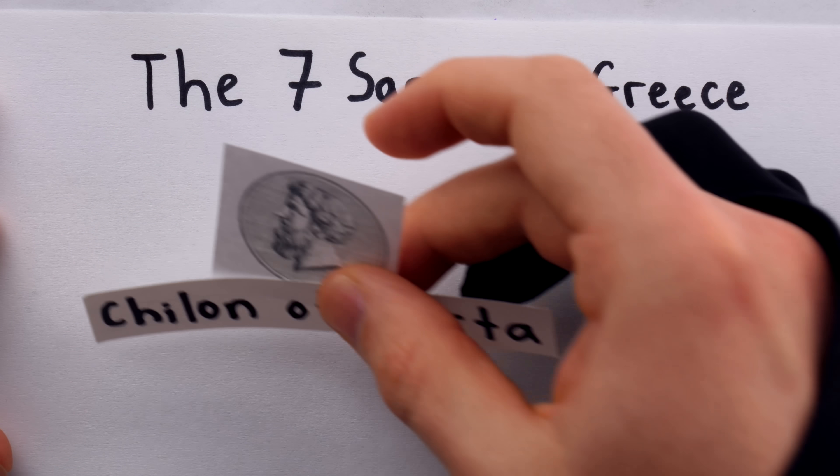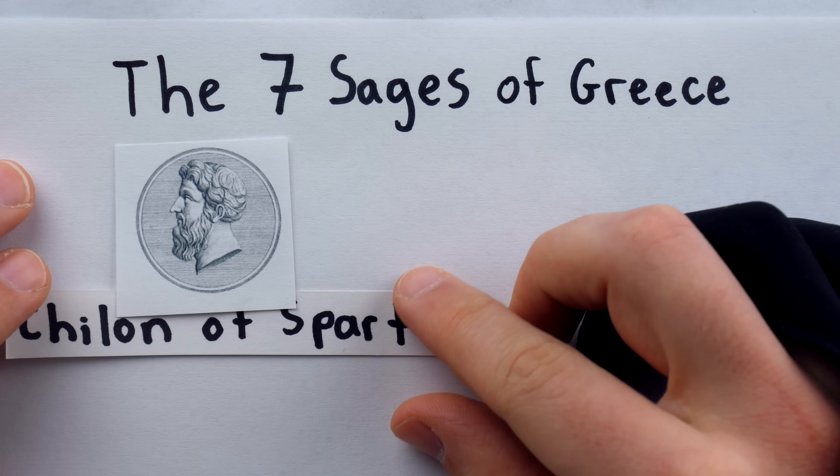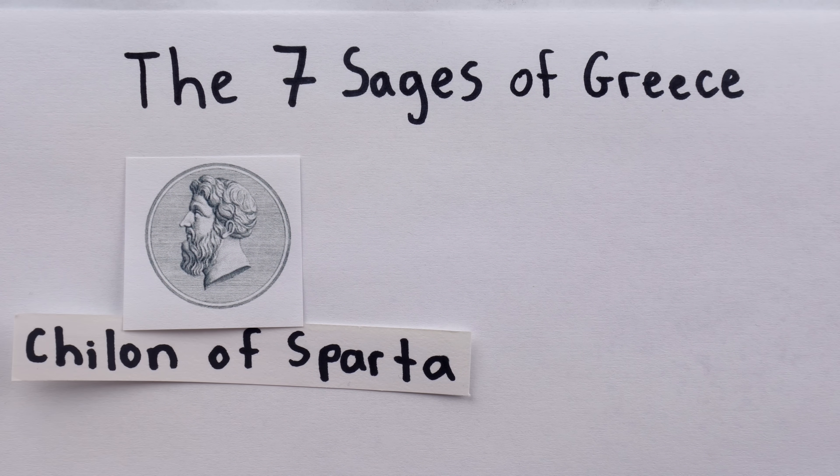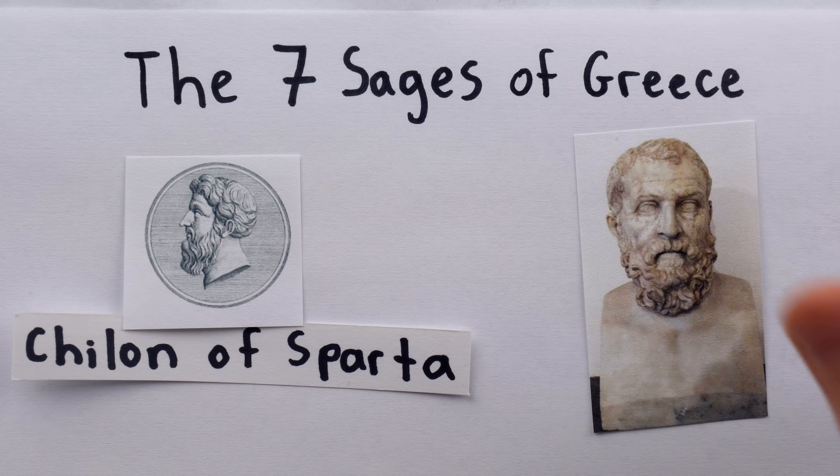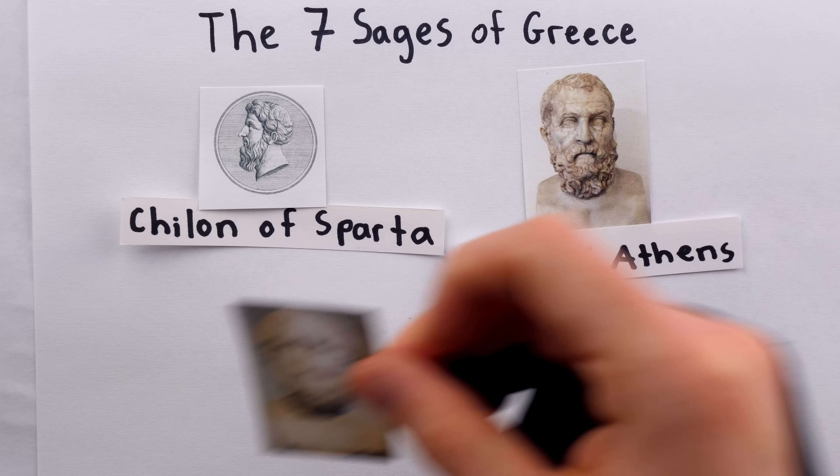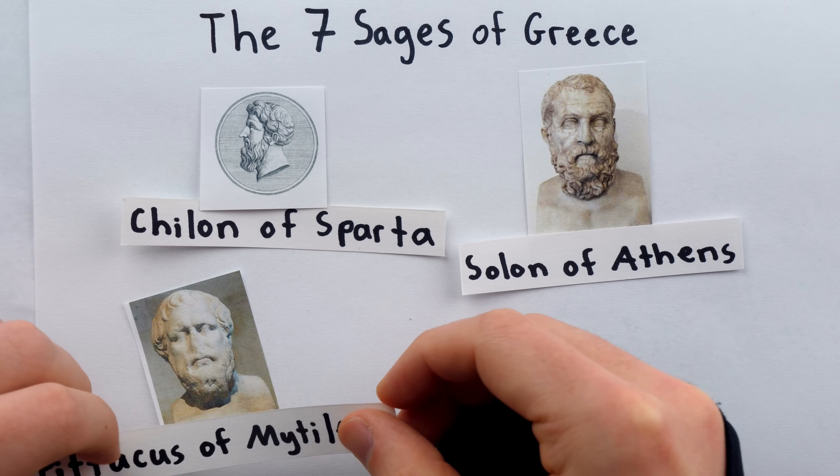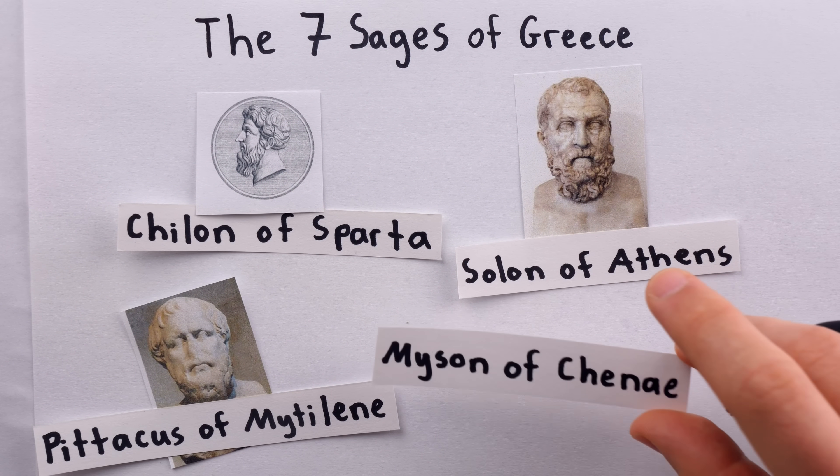They are, as described in one of Plato's dialogues, Chilon of Sparta, who was a politician, Solon of Athens, who was a statesman and poet, Pittacus of Mytilene, who was a military general, and Myson of Chenae.